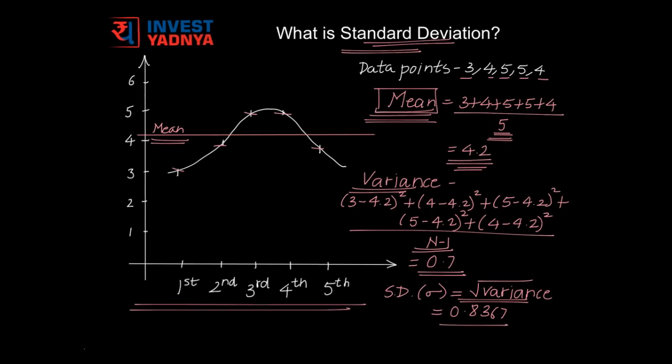So if we try to correlate this example to returns of mutual funds, it means that the returns would vary up or down by the value of Standard Deviation of that fund from its mean.